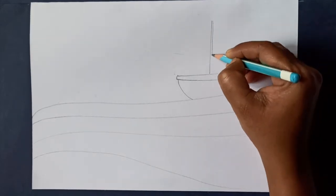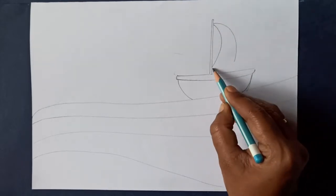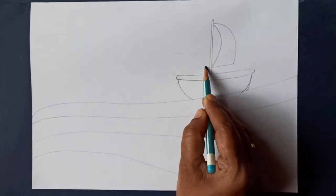Let's draw the pole. Make two lines. Draw two curved lines for the sail cloth and connect them. Draw a curved line.